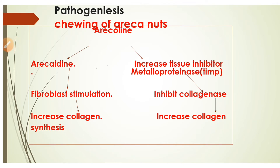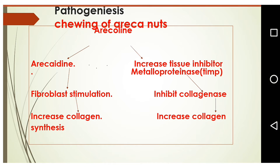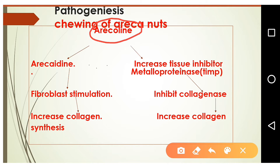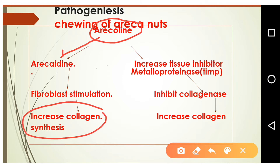In the pathogenesis of OSMF, areca nuts contain arecoline, which is eventually converted into arecaidine. This arecaidine causes fibroblast stimulation, and as fibroblasts get stimulated they start to produce more collagen. More collagen is deposited in the soft tissue, leading to stiffness of the oral cavity. Additionally, arecoline causes an increase in tissue inhibitor of metalloproteinase, also known as TIMP.